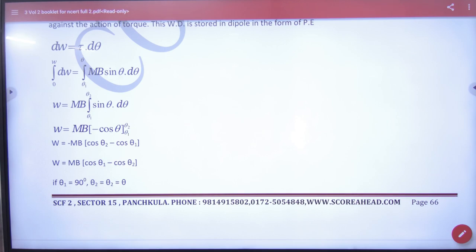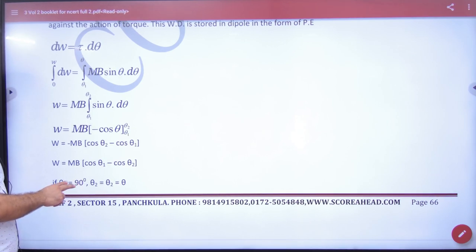And we have done a special case where the initial angle between magnetic dipole and magnetic field is 90 degrees and you rotate it to theta. So you put it in this expression, theta1 is 90 and theta2 is theta.